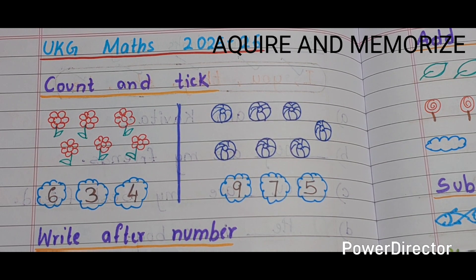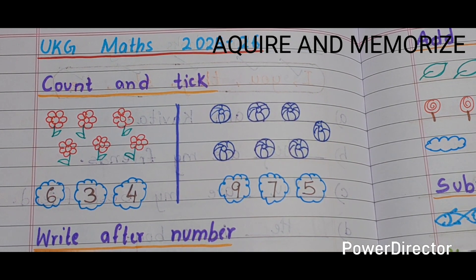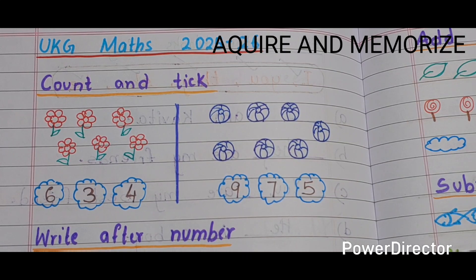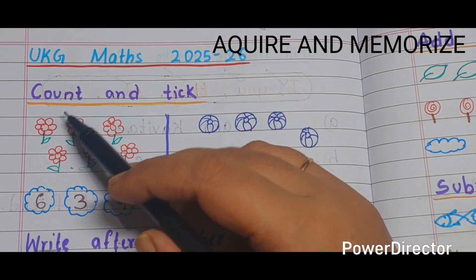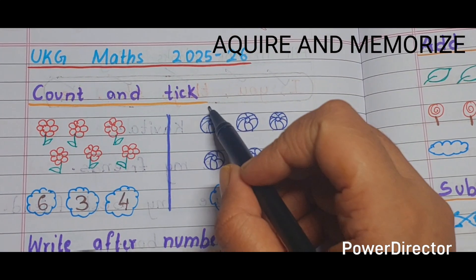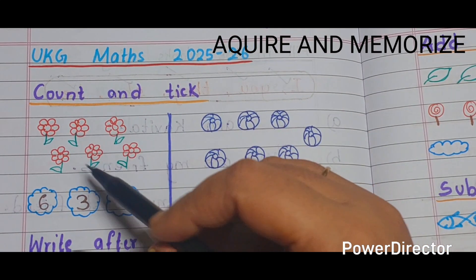Hello everyone, welcome back to my channel. In today's video we are going to see some UKG worksheet for math. In the first section we have 'count and tick', so we have to count the object and tick on the right number.